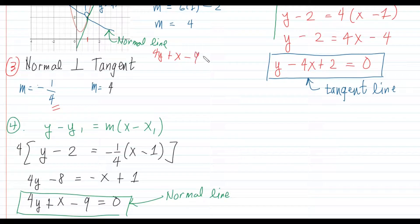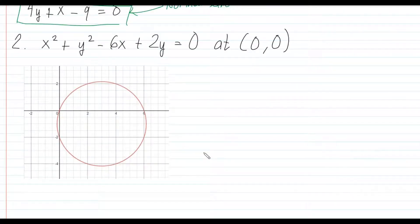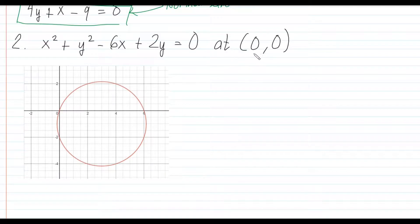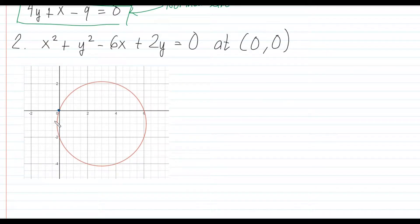Let's go to Problem 2. We have x² + y² − 6x + 2y = 0, and we need to find the tangent and normal line equations at the point (0, 0). I have graphed the function and it is a circle. The point (0, 0) is where we want our tangent and normal lines.